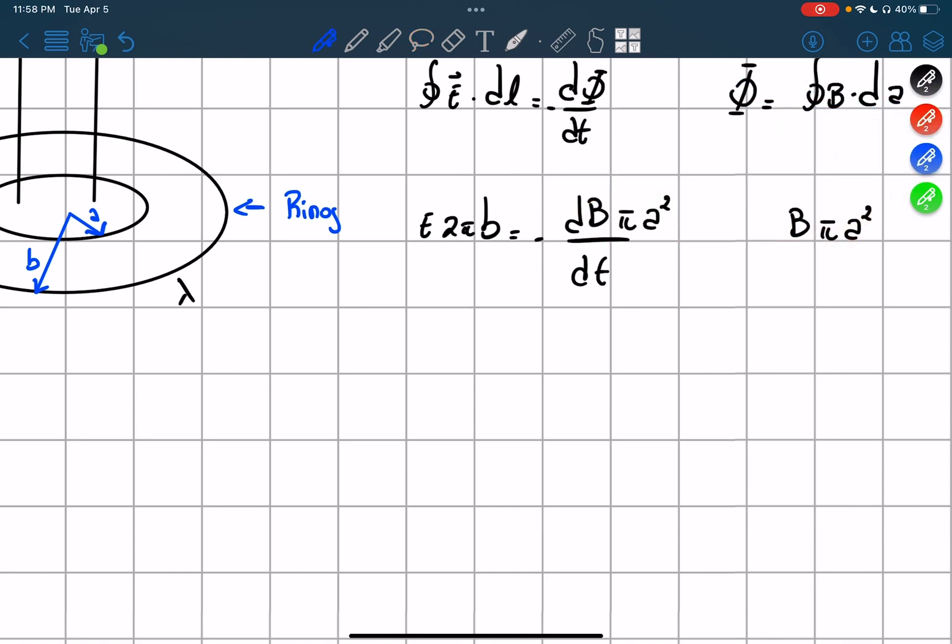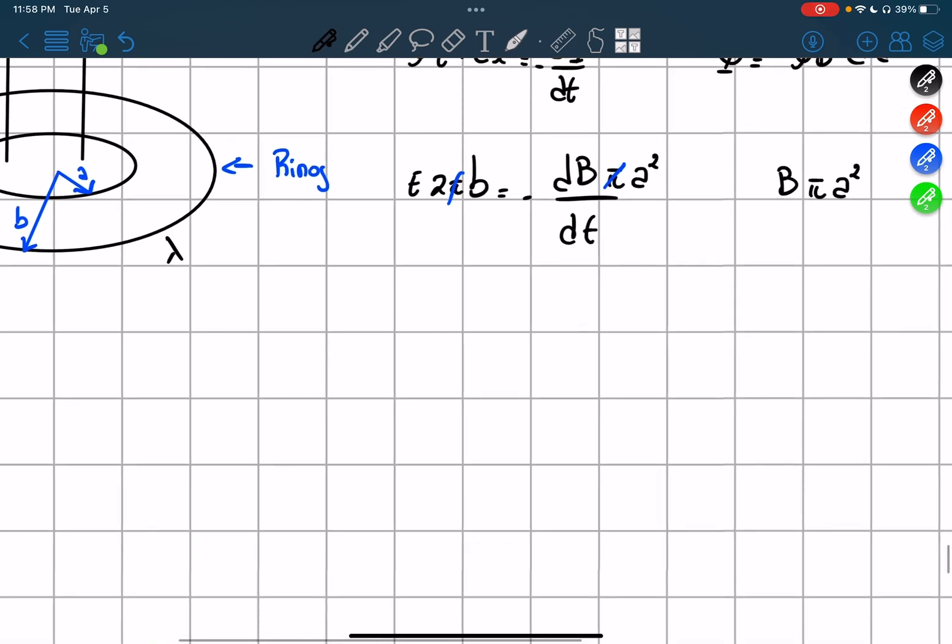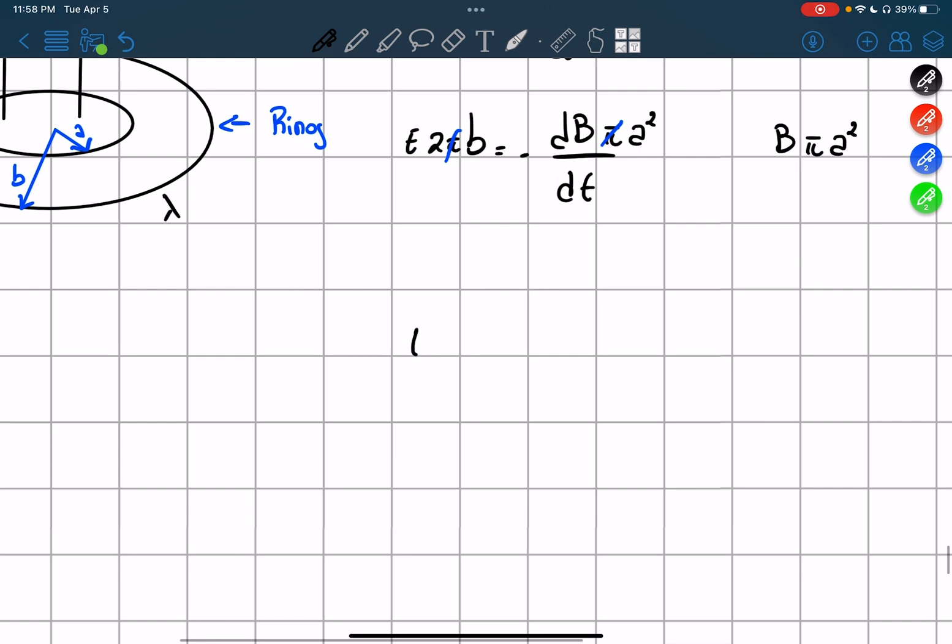Now we can start simplifying some stuff, for example, the pi. And we know that A is a constant, so we can just take it out of the derivative. So the electric field is equal to negative A squared over 2B times dB dt.